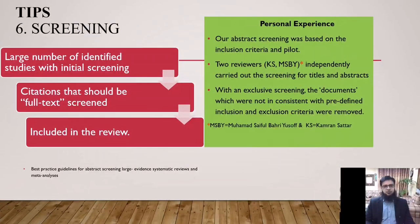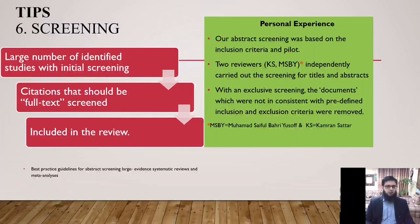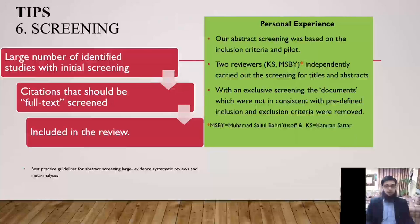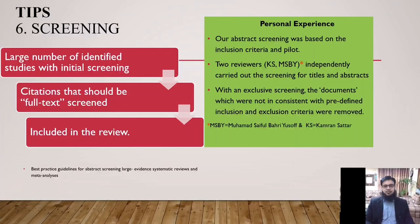The typical process of identifying eligible studies begins with screening abstracts. Initially you have a large number of documents, which are reviewed again and again until you are left with fewer but important and relevant documents. To accomplish this task, we used a three-step plan: first, abstract screening based on inclusion and exclusion criteria and pilot study; second, two reviewers independently carried out screening for titles and abstracts; third, documents not consistent with predefined inclusion and exclusion criteria were removed.